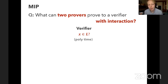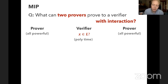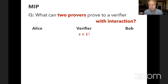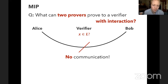The language L may be very complicated to solve, and the verifier is simple — it runs in polynomial time. So we augment the verifier with the help of two provers who are all-powerful: they can solve any problems they want. We named the provers Alice and Bob, and the constraint is that although they are all-powerful, they cannot communicate with each other.